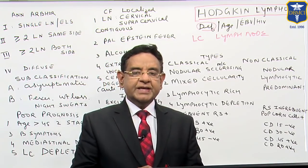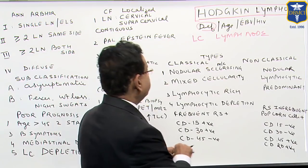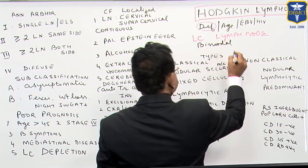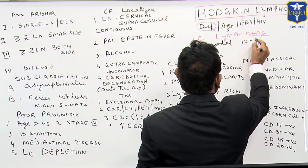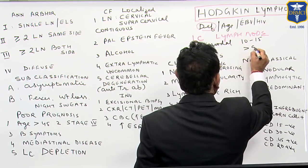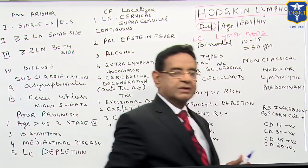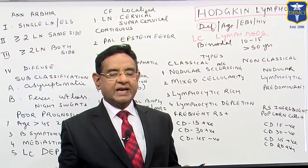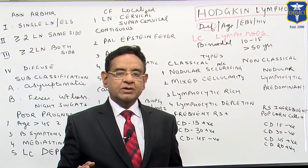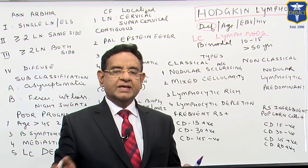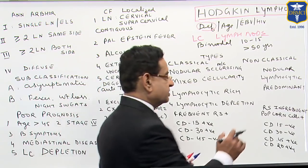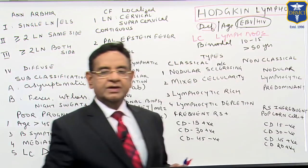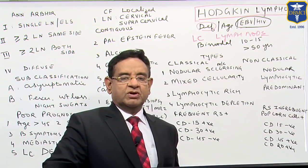As far as age involvement is concerned, it is bimodal — one peak is around 10 to 15 years and the other is above 50 years. So one group are young patients in the age of teens, and the others are elderly people. Most of the time they are idiopathic, but they may be associated with Epstein-Barr virus and HIV, which are the two strong associations of Hodgkin's disease.